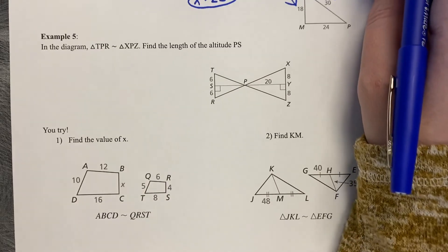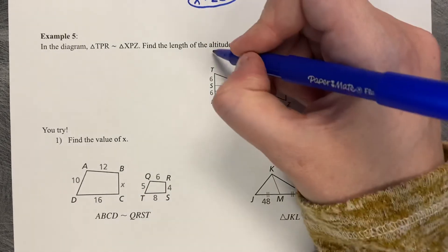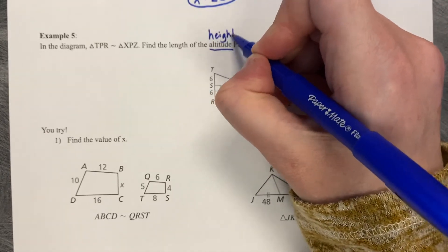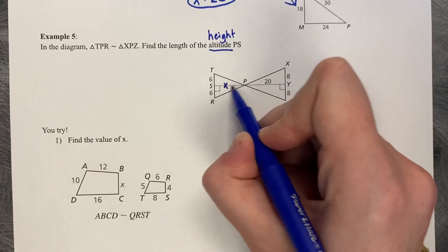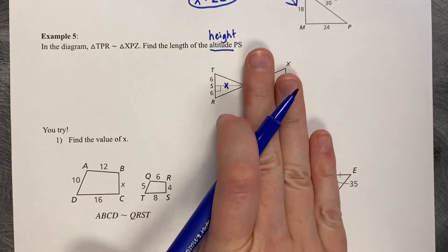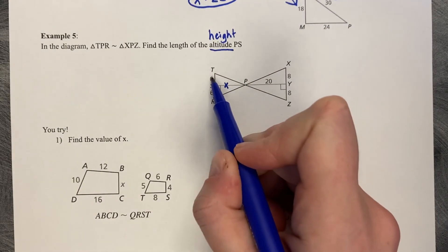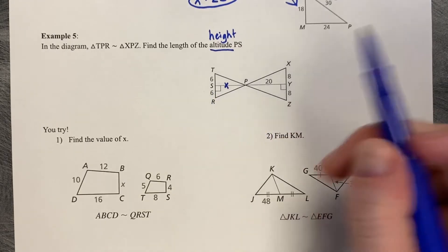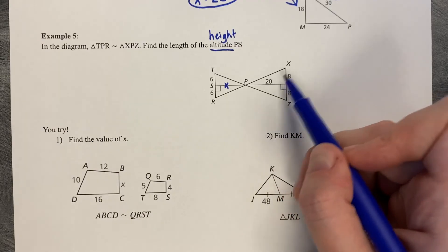Example number 5. Those two triangles are similar, and we'd like to find the altitude of PS. The altitude, another word for altitude, is height of PS. So we're looking for this length right here from P to S. So what we do is we split it into two triangles. I can see on the left triangle I've got an X and a 6, or I could say X and 12. And then on my right triangle I've got a 20 and an 8, or I could say 20 and 16.